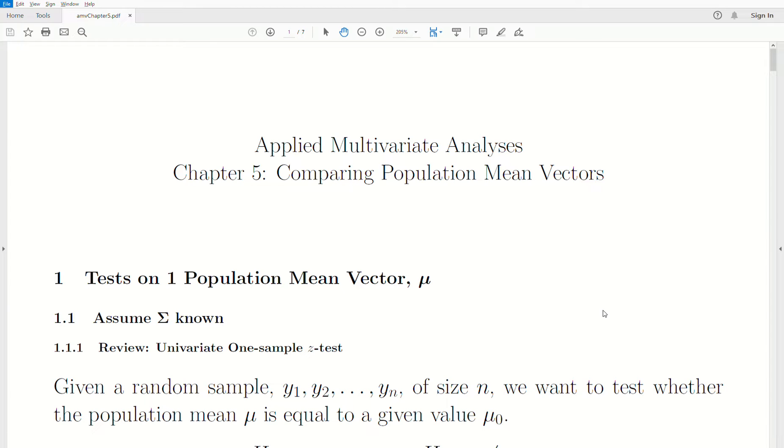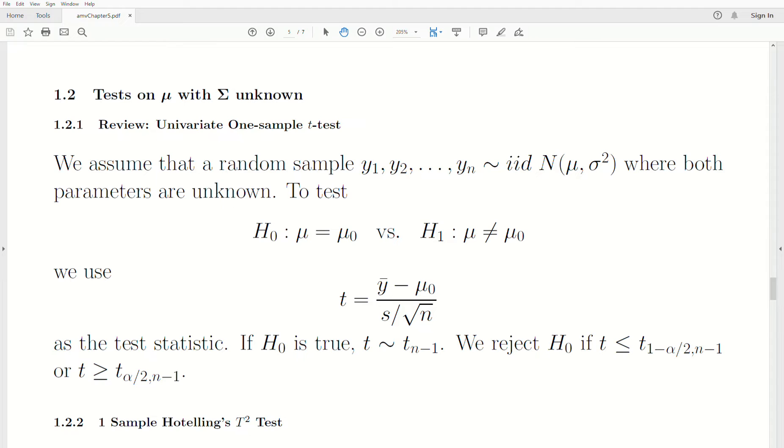Hello, this is the next video in a playlist that I'm calling Applied Multivariate Analysis. We're in Chapter 5, part of this playlist that I'm calling Comparing Population Mean Vectors. Let's jump to today's topic, which is tests on the mean vector mu with the covariance matrix unknown.